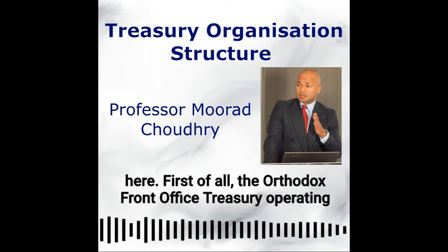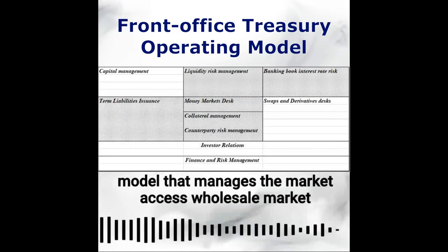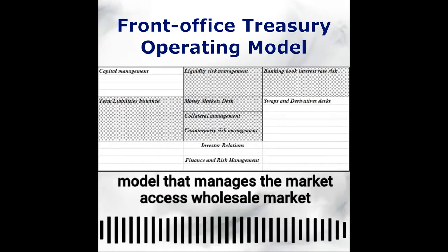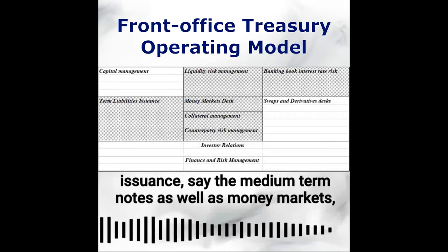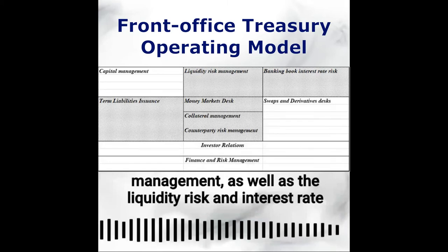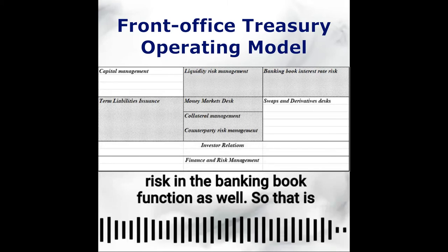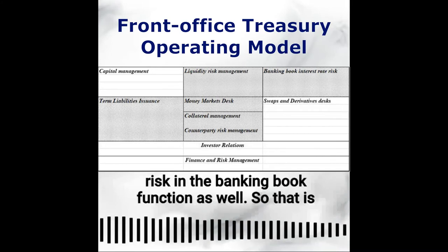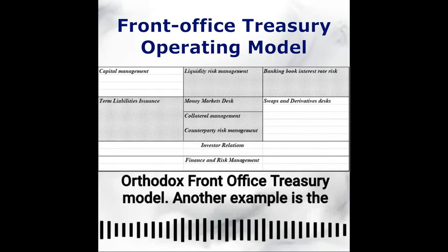First, the orthodox front office treasury operating model that manages external market access, wholesale market issuance — say medium term notes — as well as money markets, collateral management, and wholesale counterparty risk management, as well as the liquidity risk and interest rate risk in the banking book function. So that is the orthodox front office treasury model.